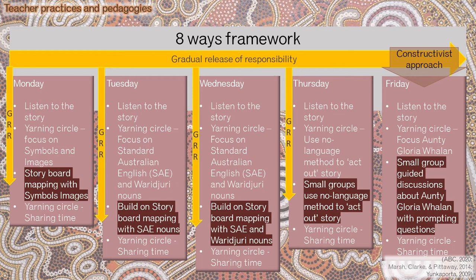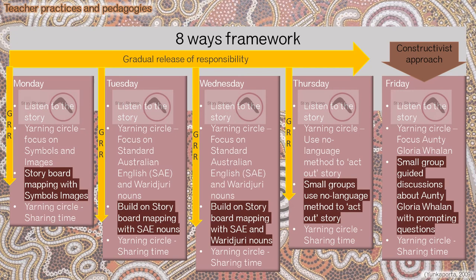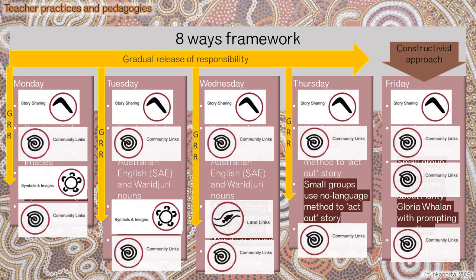The use of the Eight Ways framework will be evident through story sharing at the beginning of each lesson, symbols and images to recount the story sequence, community and land links using yarning circles, indigenous language and non-verbal communication to act out the story. To demonstrate, here are the Eight Ways concepts embedded into the plan across the week.